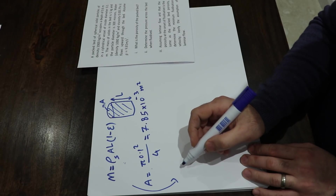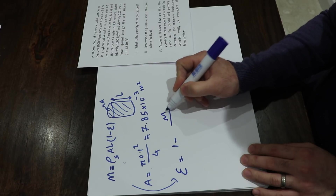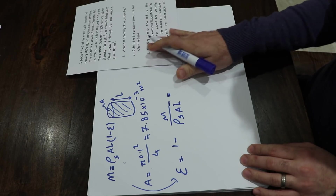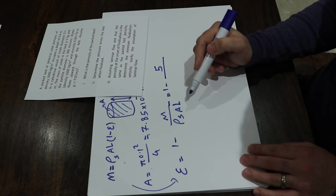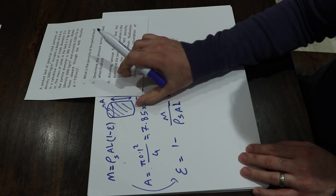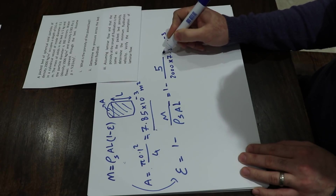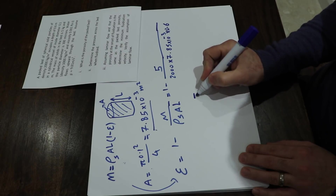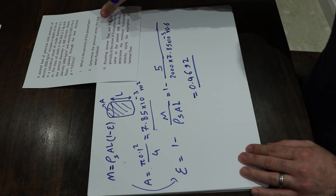From the mass equation, rearranging for porosity: ε = 1 − m / (ρ_s × A × L). Plugging in values: 1 minus 5 divided by (2000 × 7.85×10⁻³ × 0.6), the porosity is calculated as 0.4692. That's the answer to the first part.